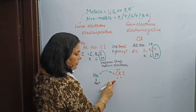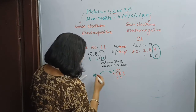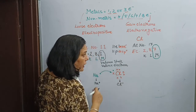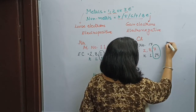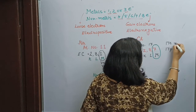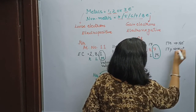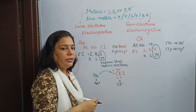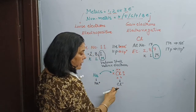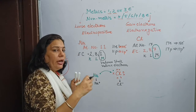Now, coming to chlorine — initially it has 17 electrons and 17 protons. After gaining 1 electron from sodium, it converts into Cl minus. It now has 18 electrons and 17 protons. As protons carry positive charge and electrons carry negative charge, the 1 negative charge is more in comparison to positive charge, so it converts into Cl minus. The neutral chlorine atom has converted into an ion — a charged species.